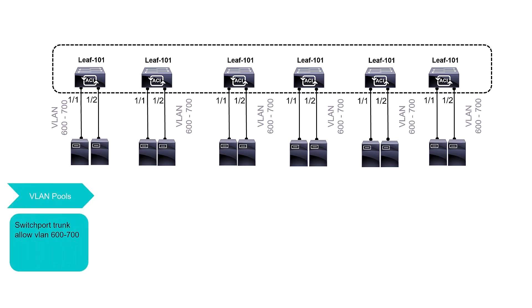Step one: configure your VLANs of choice — for example, VLAN 600 to 700. Configure them in trunk fashion, since most of the time you'll carry multiple VLANs. Step two: choose your domain. You have three choices — is this a physical bare-metal server, a virtual machine, or are you connecting the leaf to an external domain?